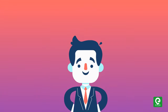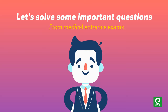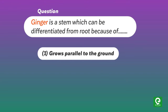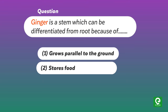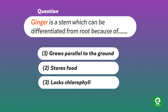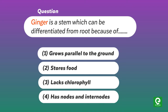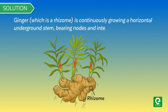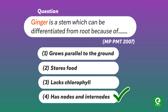Let's solve some important questions from medical entrance exams. Question: Ginger is a stem which can be differentiated from a root because of — (1) grows parallel to the ground, (2) stores food, (3) lacks chlorophyll, (4) has nodes and internodes. This was asked in MPPMT 2007. Solution: Ginger, which is a rhizome, is a continuously growing horizontal underground stem bearing nodes and internodes. Hence option 4 is the right answer.